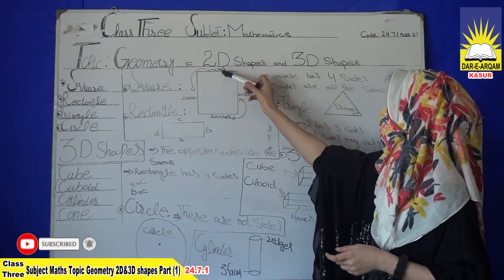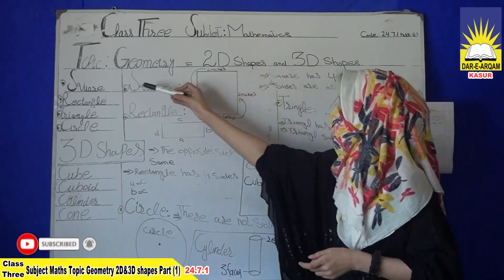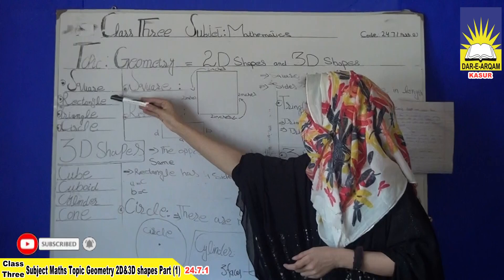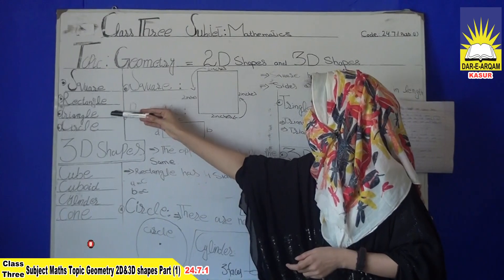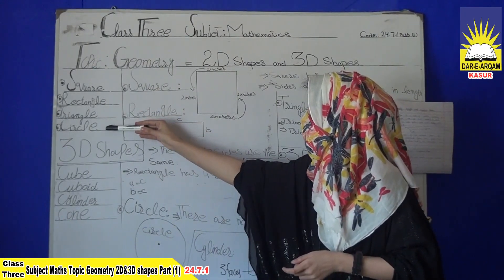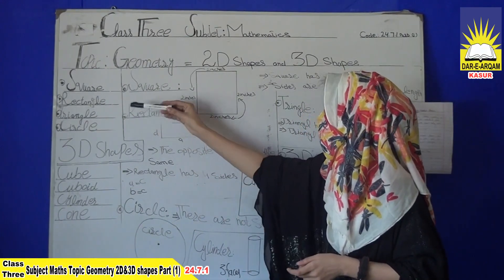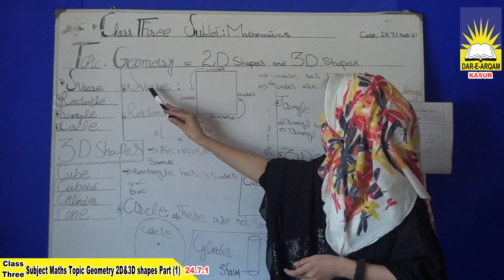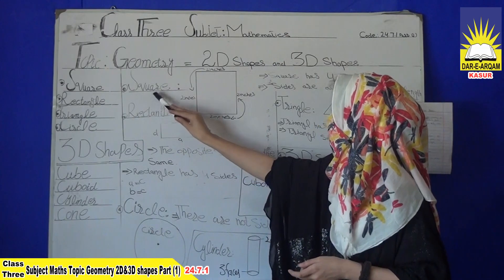In 2D shapes we have square, rectangle, triangle, and circle. First of all, I will tell you about the square.